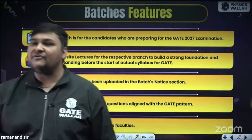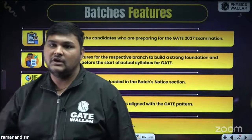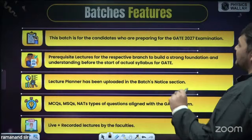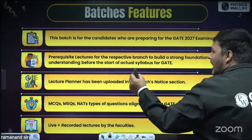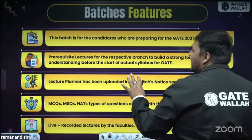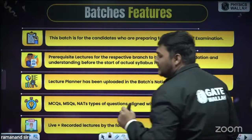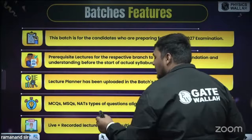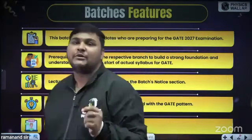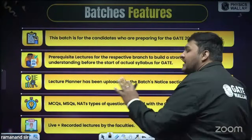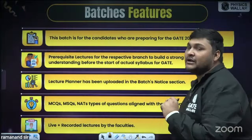Now we will discuss the features of this batch. First, this is a Gate 2027 batch with an updated lecture plan — you will get the entire tentative schedule. In GATE, three categories of questions come: MCQ, MSQ, and Numerical Answer Type. Whatever questions we discuss in class and whatever practice we provide will cover all these categories.